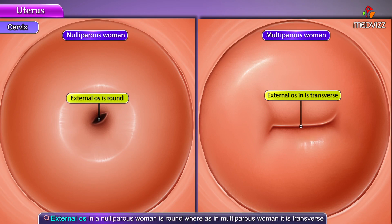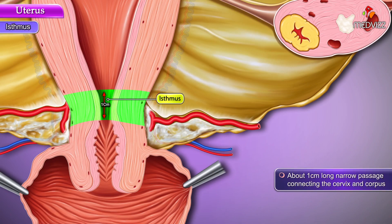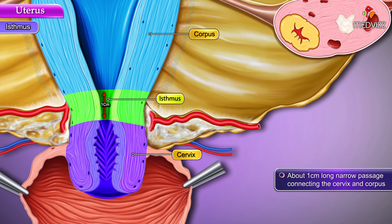The external os in a nulliparous woman is round, whereas in a parous woman it is transverse. The isthmus is about one centimeter long and is a narrow passage connecting the cervix and the corpus.